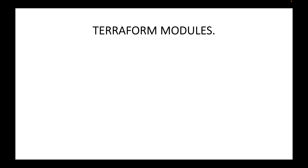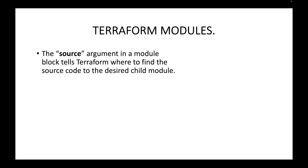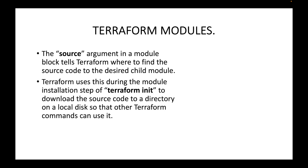In this session we will look at local paths — how we can define module blocks pointing to local paths. Before that, let's discuss the different options or sources we can use when working with Terraform modules. The source argument within your module block tells Terraform where the source code is available for the desired child module — basically where the actual code that will be creating resources is available. We define that using the source argument.